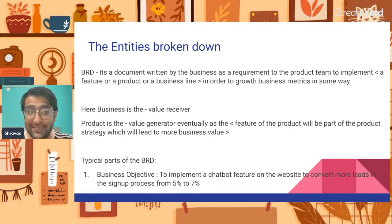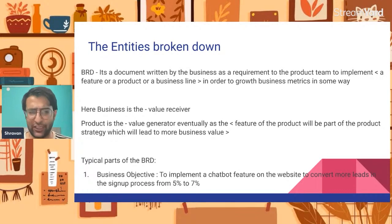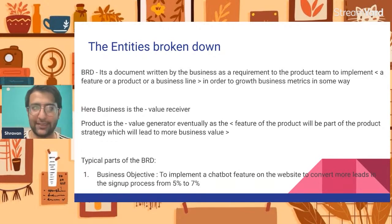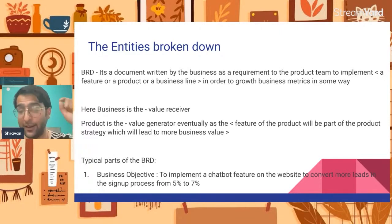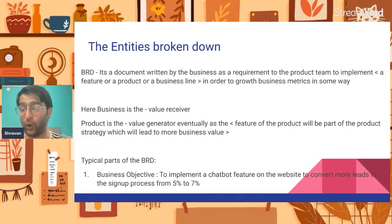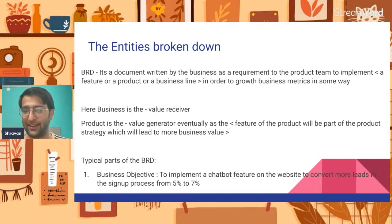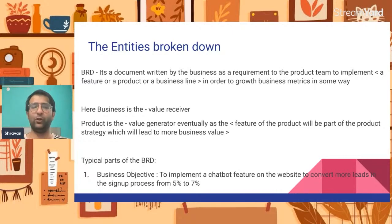Who is the value receiver here? It's the business which is the value receiver. For example, I am a sales guy and I want a feature implemented because it will help me generate more sales. So I am the value receiver — I will write this document, give it to the product guys, and say that if you implement this feature I will be able to generate revenue of $1 million. Business is the value receiver who writes the BRD. The product team is the value generator — they build the feature so business can sell it.